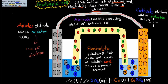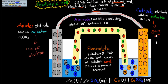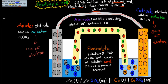The cathode would be the opposite — that's the electrode where reduction occurs. Remember, reduction is just the gain of electrons. Here, we've gained these electrons: electrons from the anode have traveled through this wire and they have met at the cathode. So the cathode has gained these electrons.